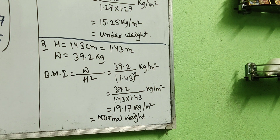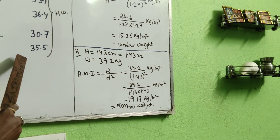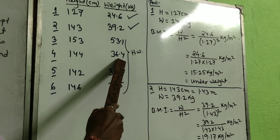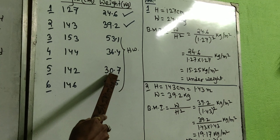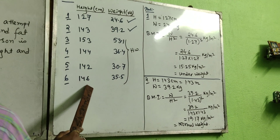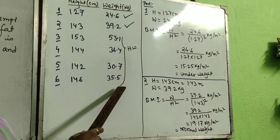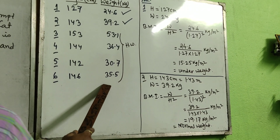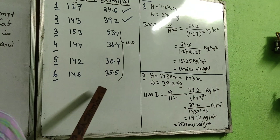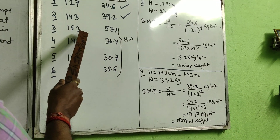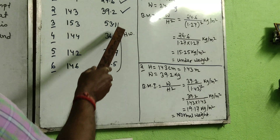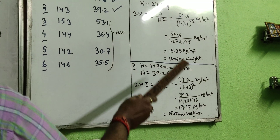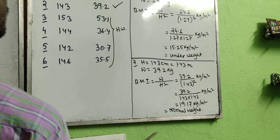For homework, I have given four more individuals: height 153 cm / weight 53.1 kg; height 144 cm / weight 36.4 kg; height 142 cm / weight 30.7 kg; and height 146 cm / weight 35.5 kg. Calculate the BMI for each and determine the category. You can also measure your own height and weight, calculate your own BMI, and see which range you fall into.